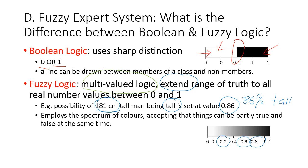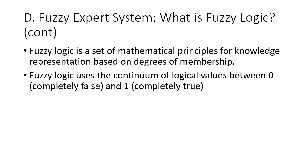Fuzzy logic is able to employ a spectrum of values, and it is said that things can be partly true and partly false at the same time. Fuzzy logic is a set of mathematical principles based on degrees of membership — how many degrees do you belong in a particular set? Fuzzy logic uses the continuum of logical values between zero, which is completely false, and one, which is completely true.